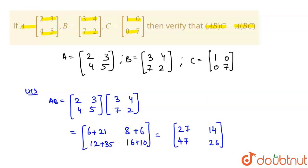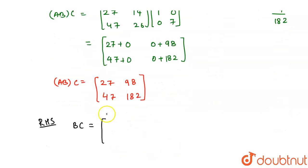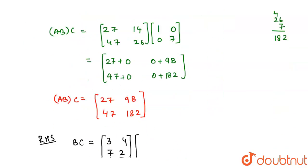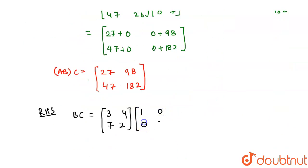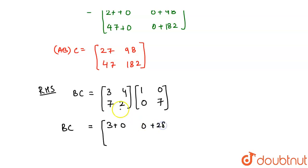Now let's find the RHS, A(BC). First find BC: B is [[3,4],[7,2]] multiplied by C which is [[1,0],[0,7]]. Element (1,1) = 3×1 + 4×0 = 3. Element (1,2) = 3×0 + 4×7 = 28. Element (2,1) = 7×1 + 2×0 = 7. Element (2,2) = 7×0 + 2×7 = 14. So BC equals [[3,28],[7,14]].